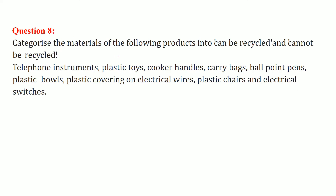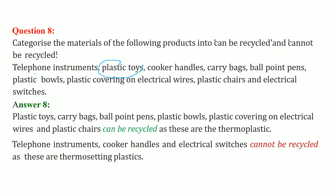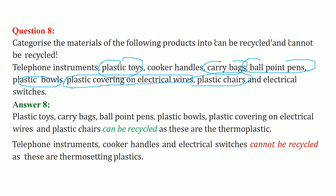Categorize materials into recyclable and non-recyclable. Recyclable items: plastic toys, carry bags, plastic balls, ballpoint pens, plastic covering on electrical wires, and plastic chairs. Non-recyclable items: telephone instruments, cooker handles, and electrical switches.